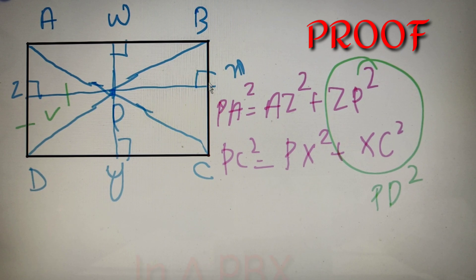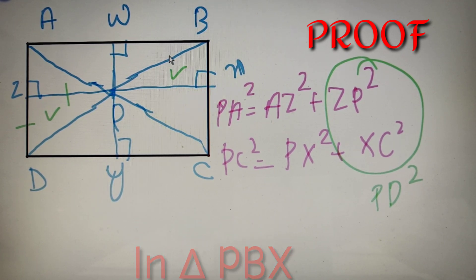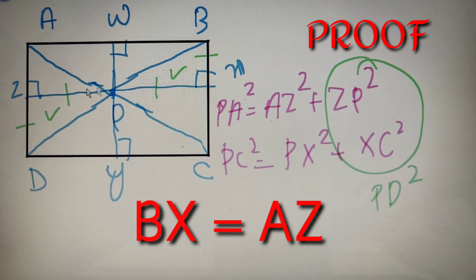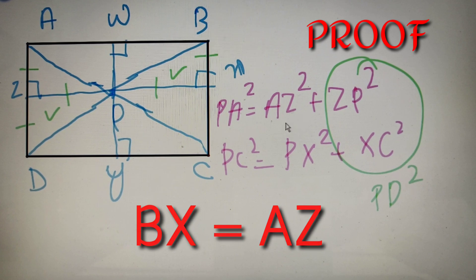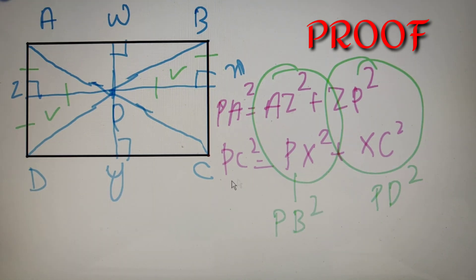In triangle PBX, PB² = PX² + BX². Since AZ and BX are equal — divided by the same perpendicular — we can write BX² as AZ². Therefore, AZ² + PX² gives us PB². Combining all these results, we have proved the British flag theorem: PA² + PC² = PB² + PD².